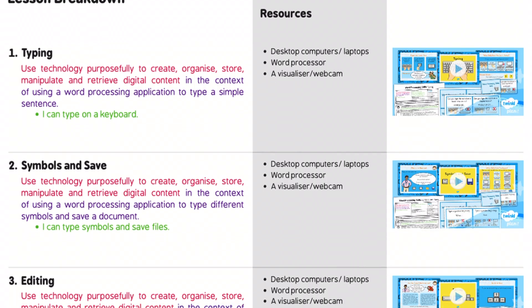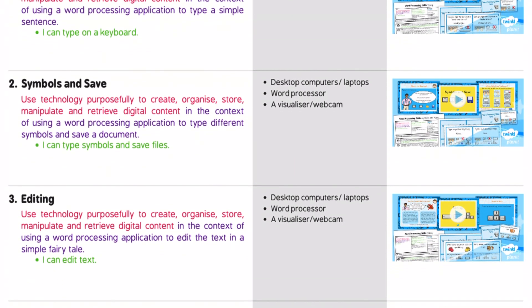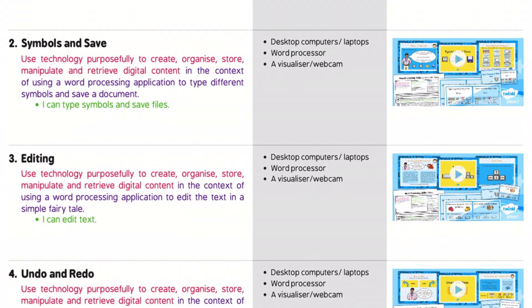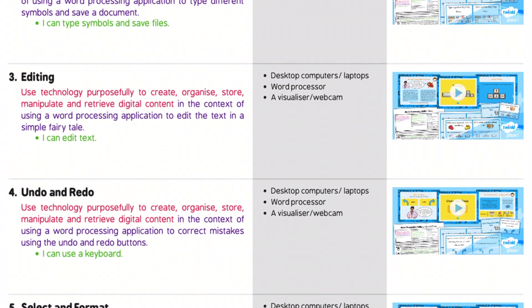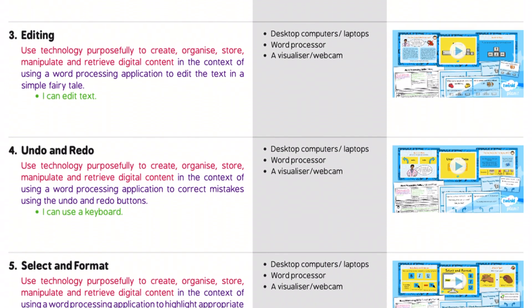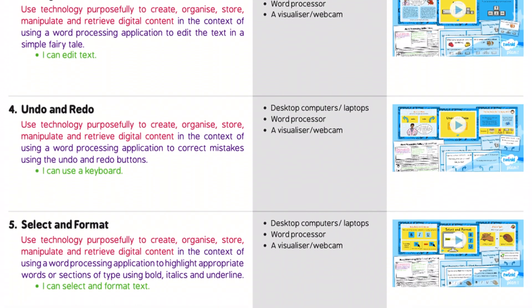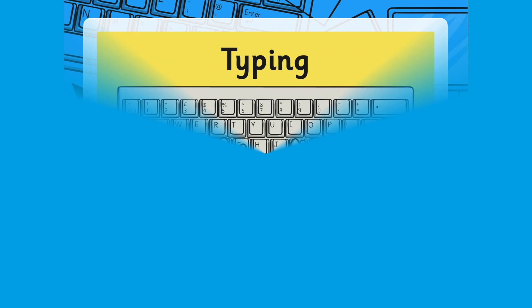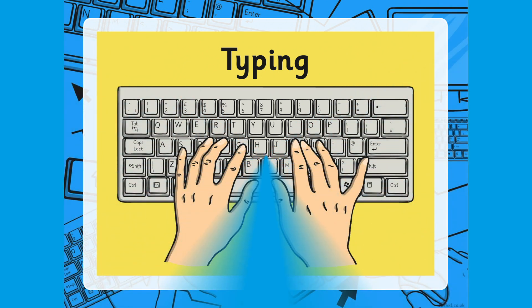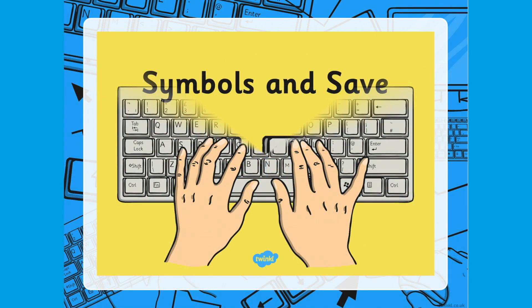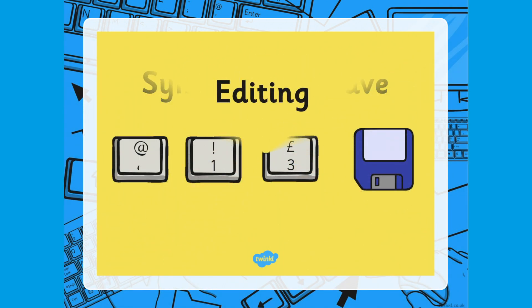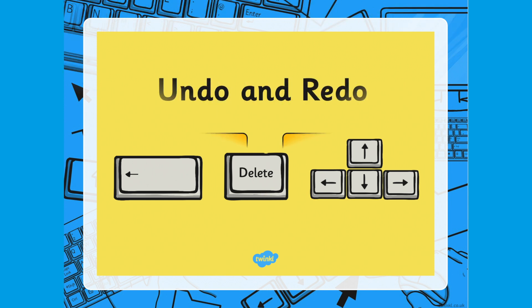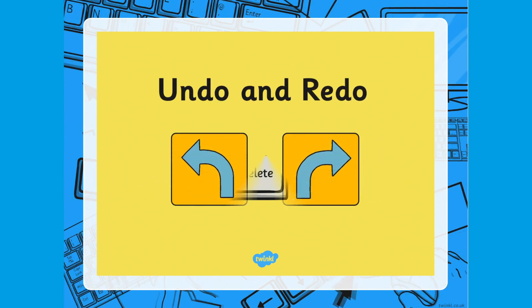To see this at a glance, open up the planning overview where you will find a breakdown of lessons, resources, and learning intentions. The succession of lessons perfectly helps your child develop their word processing skills, building on their knowledge from one lesson to the next.